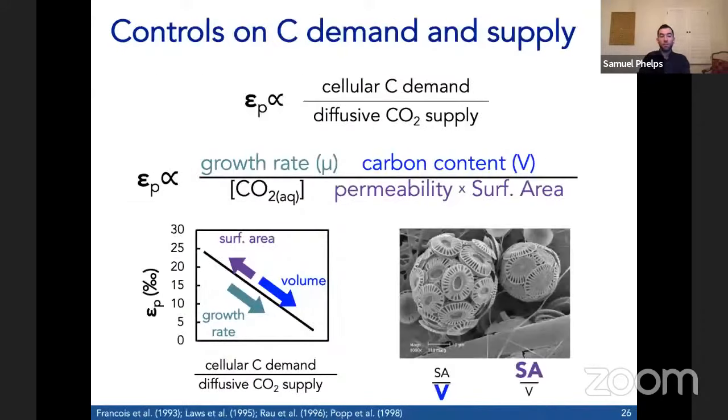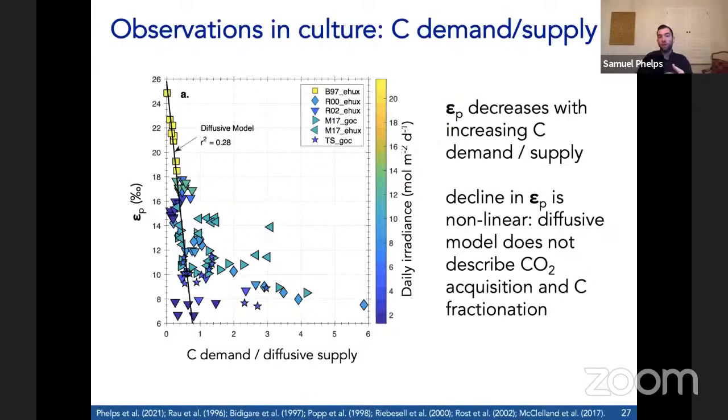Carbon demand is proportional to the growth rate times the carbon content of the cell - how much carbon it's fixing. Larger cells and faster growing cells have a higher carbon demand. The surface area of the cell sets the area over which CO2 can diffuse into the cell, so that sets the permeability, the CO2 supply. The surface area sets the diffusive CO2 supply. These cells are nearly spherical, so we can measure the cell diameter and approximate them with a spherical geometry. In the diffusive model, the maximum EP would occur at 25 per mil, and we would predict that these variables would affect EP in these directions.